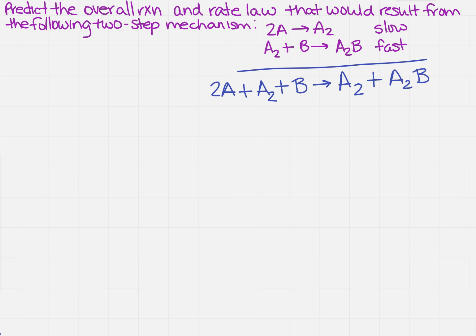Now when I do that, I notice that there's something that looks exactly the same on both sides, so it's just like math. I can cancel anything that looks exactly the same, and then I'm going to write everything that's left over. So I've got 2A plus B yields A sub 2B.